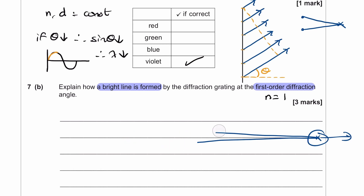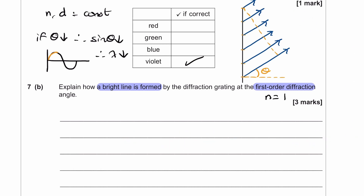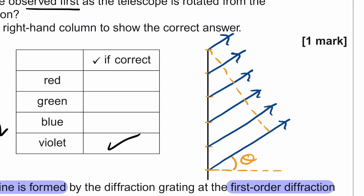Going back to the diagram: with the dashed line drawn perpendicular to the rays, the distance along the lower ray between the perpendicular and the second slit represents the path difference — the difference in distance traveled by these two rays as they meet at a point further away. This bottom ray has traveled an extra distance equal to this path difference. If the angle here is θ, then this angle in the triangle is also θ.